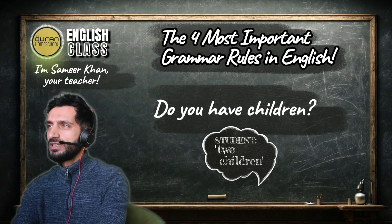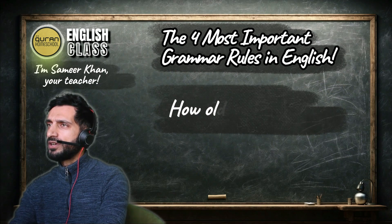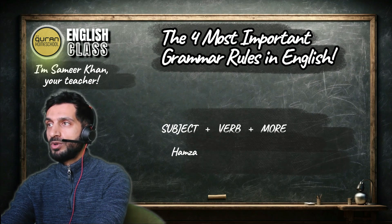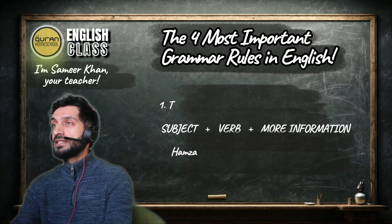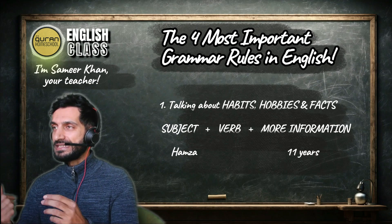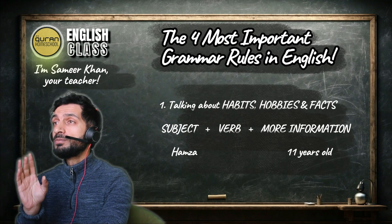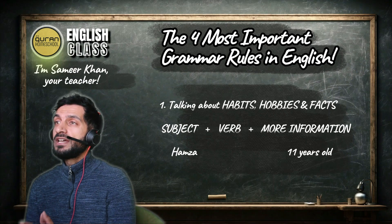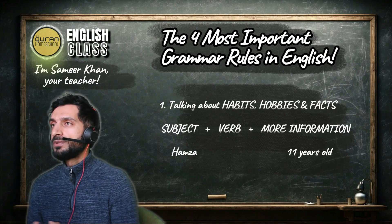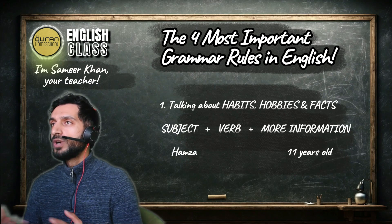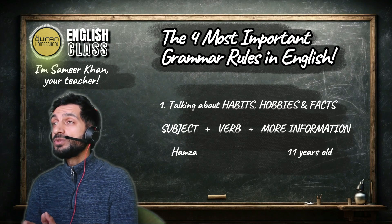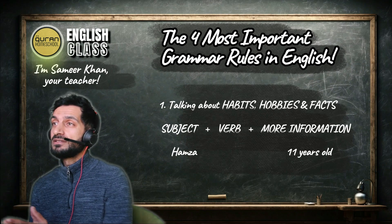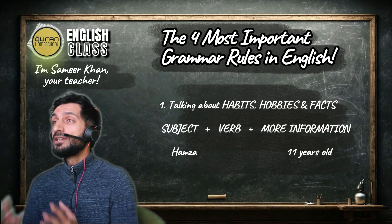We need to use the rule: subject, verb, more information. This is the most important thing when you make a sentence. In English you must have a verb to make a full sentence. If you don't have a normal verb like eat, play, go, work, then you need to use a helping verb. This is called the verb to be — it's a helping verb, an auxiliary verb.